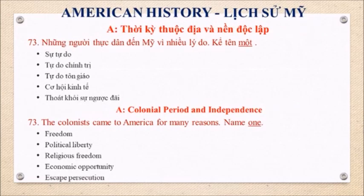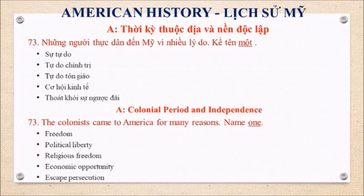American History — Colonial Period and Independence. Question 73: The colonists came to America for many reasons. Name one. Freedom. Political liberty. Religious freedom. Economic opportunity. Escape persecution.